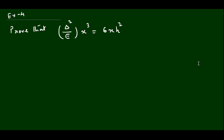It will be better understood if you work along with me — do the first problem, pause the video, and once it's clear, move to the second problem. Practicing this way makes all the solutions very easy to follow. Now in the next problem we again have both delta and E. We take the left-hand side: delta² / E · x³.